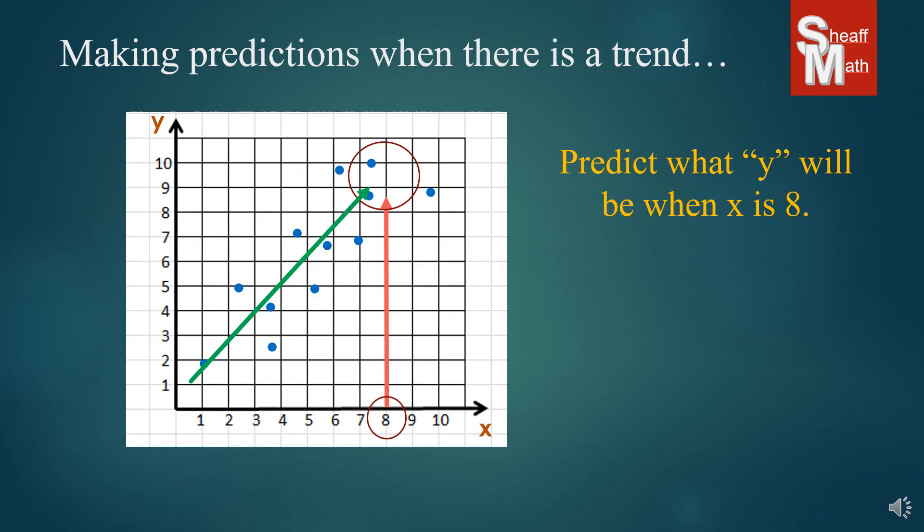Now you wouldn't say something like two because two is way out of this trend. So that's how you find a missing prediction.